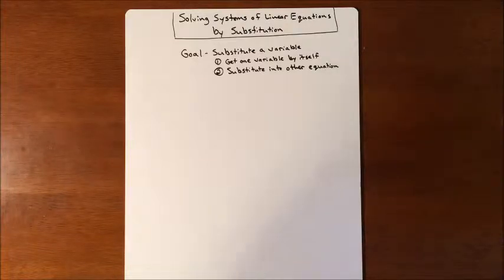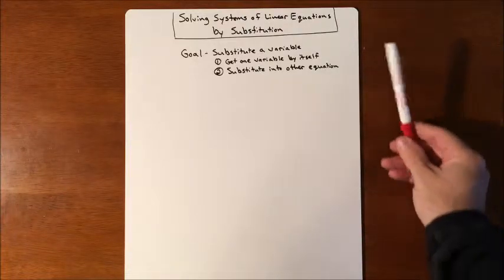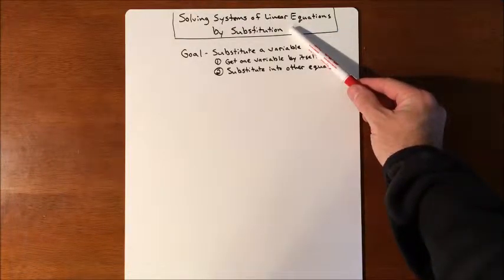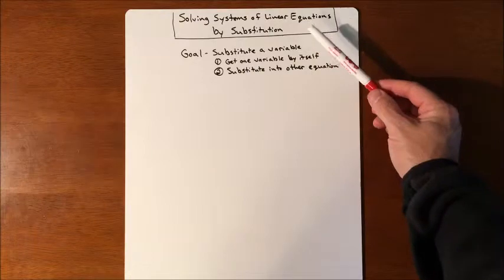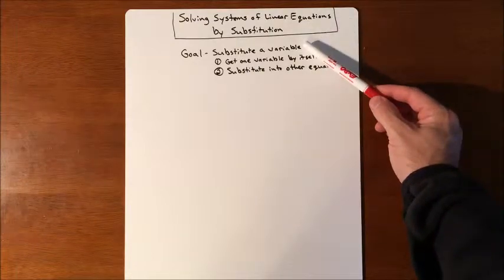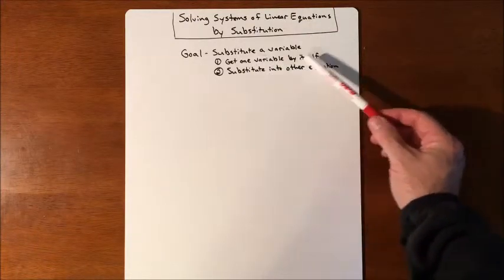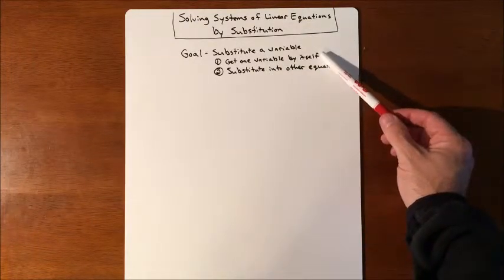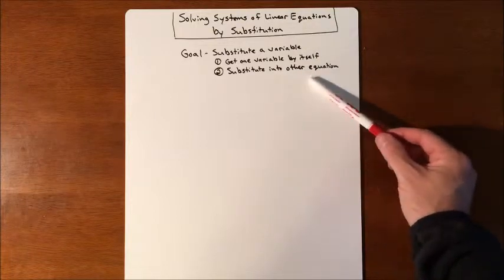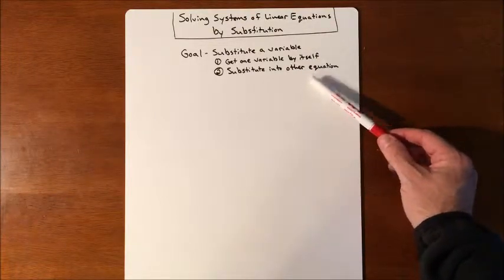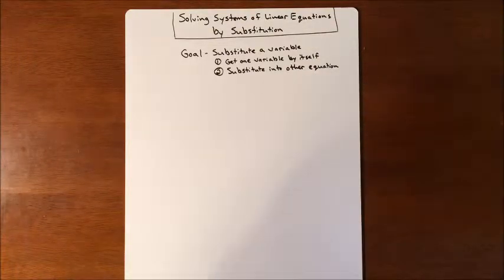In this lesson we're going to be solving systems of linear equations by substitution. To make that happen, our goal is to substitute one variable — we have to get one variable by itself and then substitute that into the other equation.